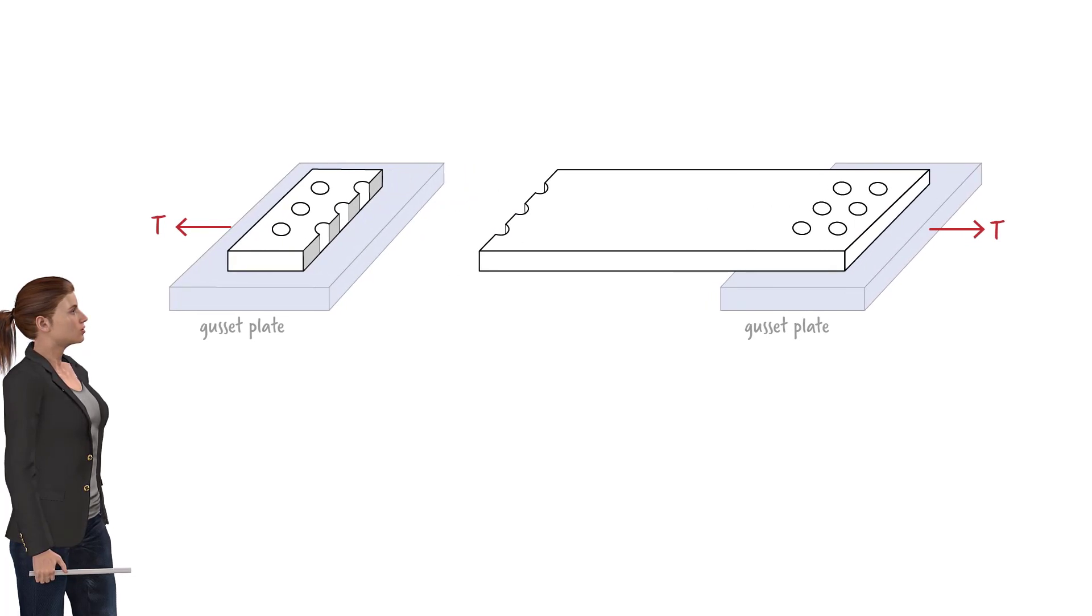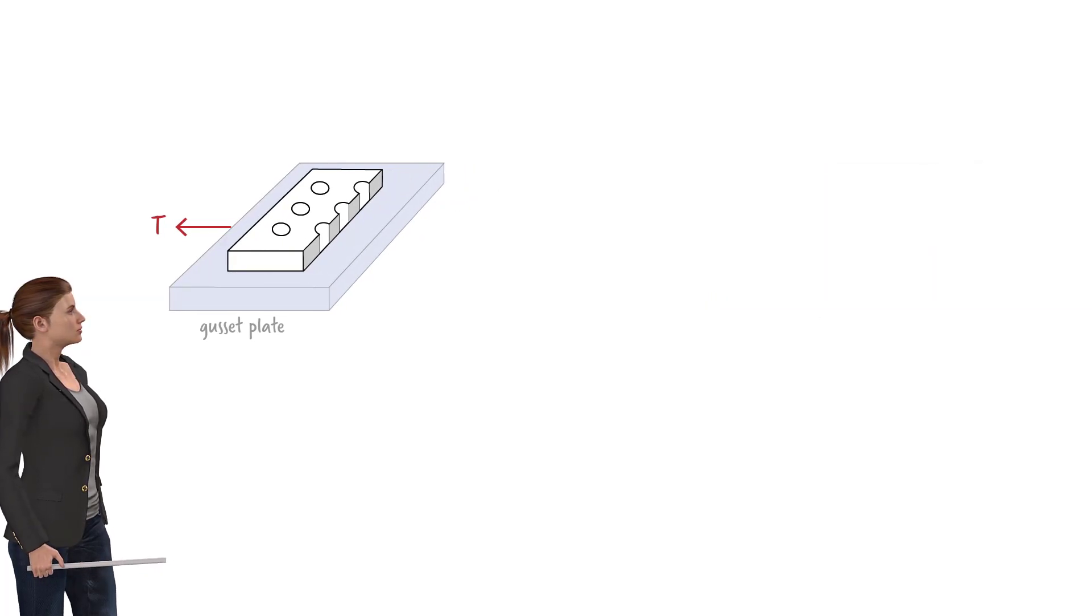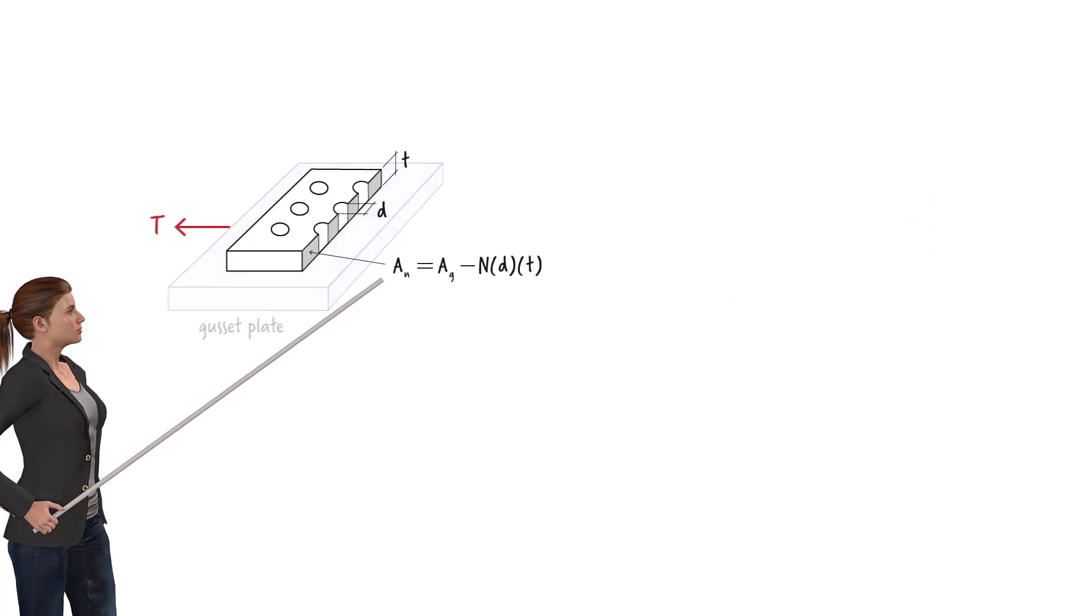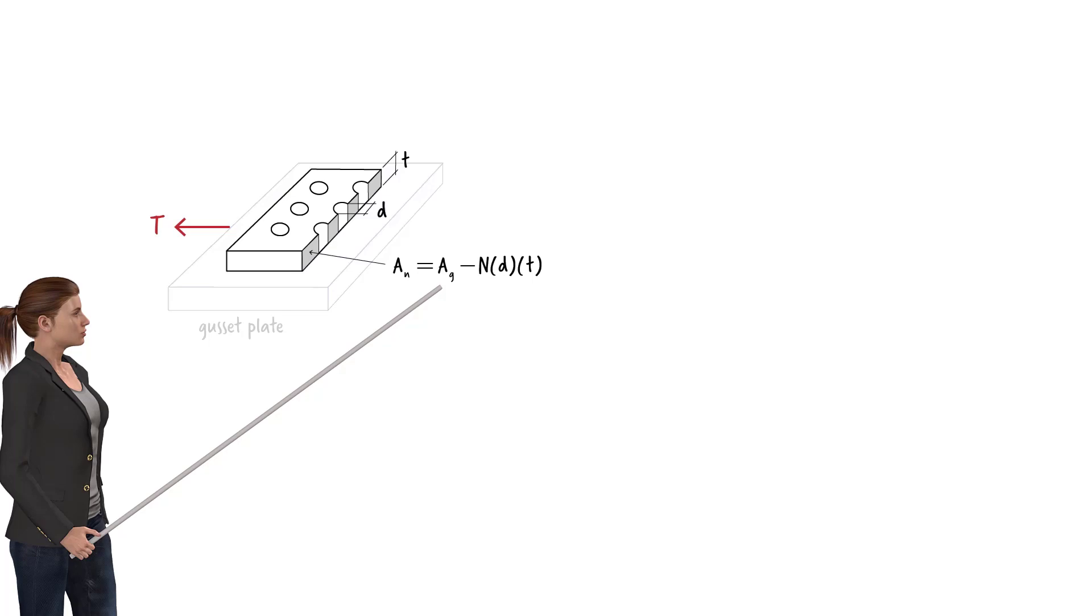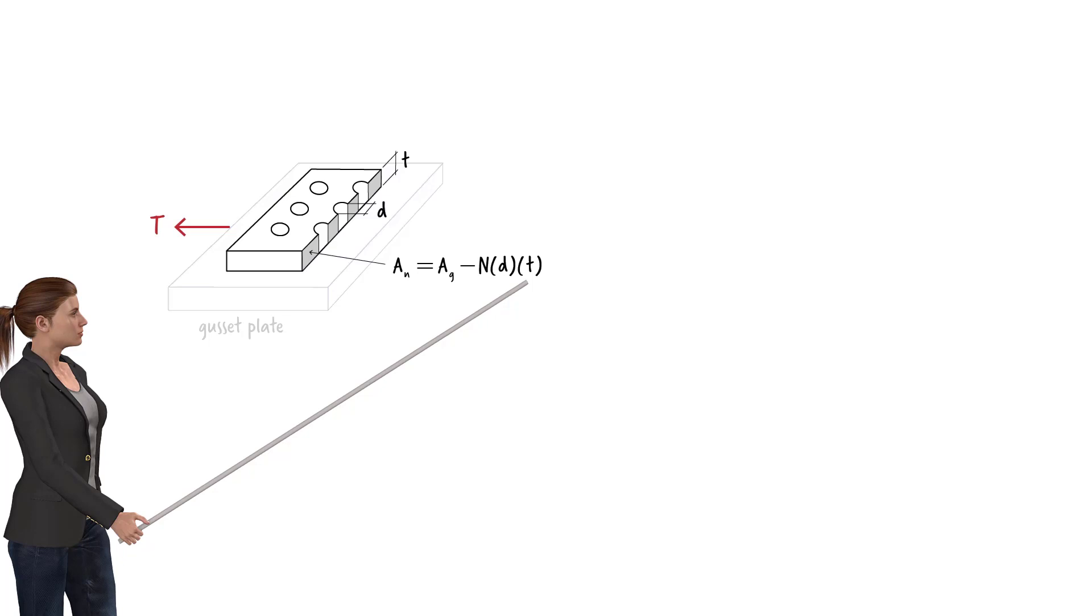The net area to be used for calculating rupture strength therefore equals... In this equation, Ag is the gross area of the cross section, n is the number of holes in the path of failure, d is the hole diameter, and t is the thickness of the connected member. This net area is subjected to the axial stress the tension force T produces.